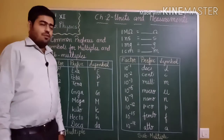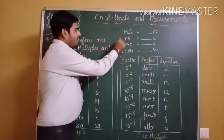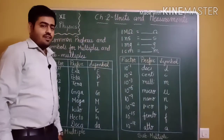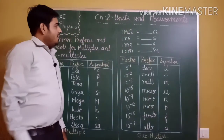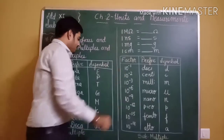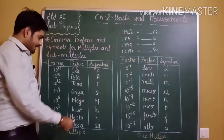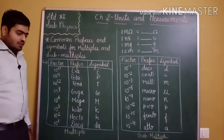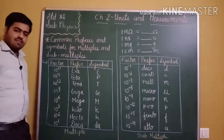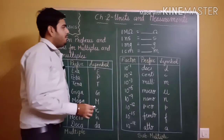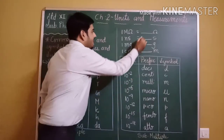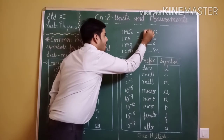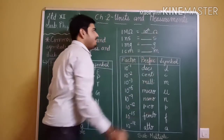Example 1: 1 mega ohm equals 10 to the power 6 ohm, because mega (symbol capital M) from the multiples table means 10 to the power 6. So 1 mega ohm can be written as 10 to the power 6 ohm.